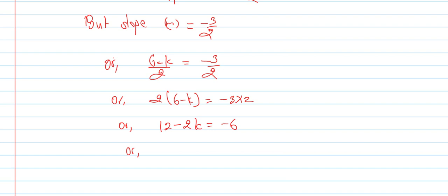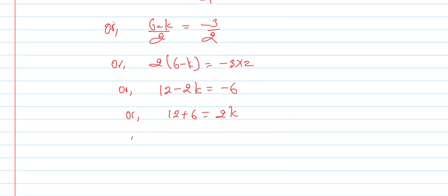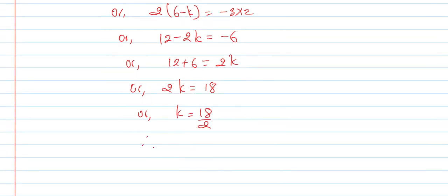Move -2k to right side: 2k equals 6 plus 6, so 2k equals 12. Therefore k equals 12 divided by 2, so k equals 6. Sorry, k is 9.